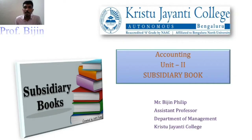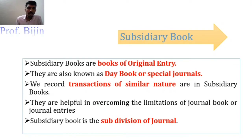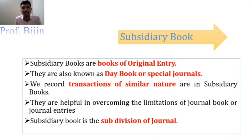So what is a subsidiary book? A subsidiary book is the subdivision of the general journal. Subsidiary books are books of original entry — the same way as the general journal — and they are also known as day books or special journals. The key point is that we record transactions of similar nature in a subsidiary book.